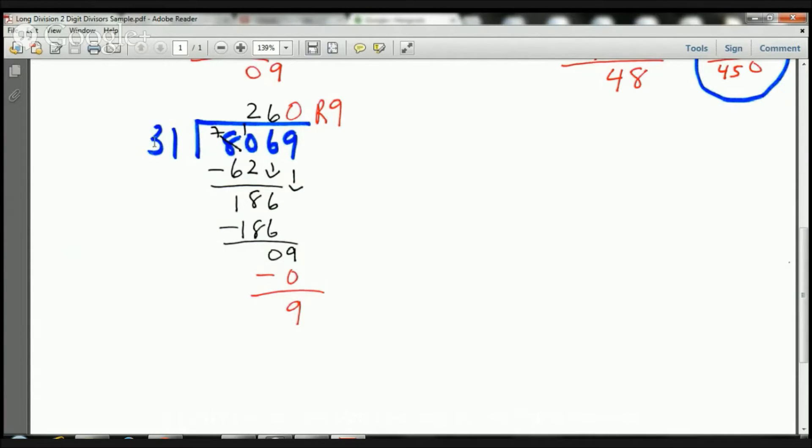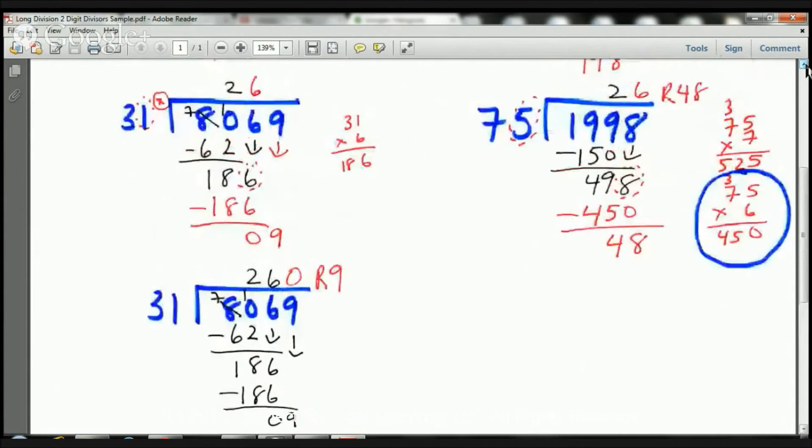31. How many times can 31 go into 9? Well, it can 0 times. And take a look right here, boys and girls. Because I've got this number here, I'm going to need to put a number there. So 31 times 0 equals 0, and 9 take away 0 is 9. That's our remainder. So the answer is 260, remainder 9. And that's it. Let's take a look at another example.